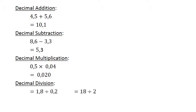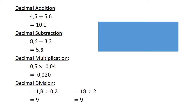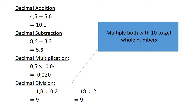Decimal division: 1.8 divided by 0.2 equals 9. We multiply both by 10 to get whole numbers: 18 divided by 2 equals 9.